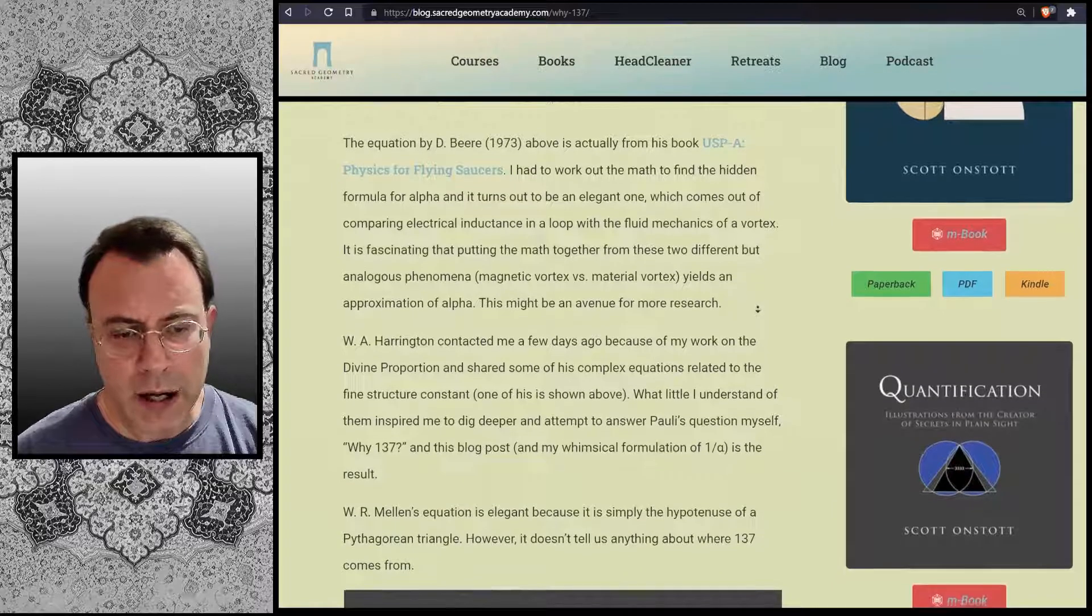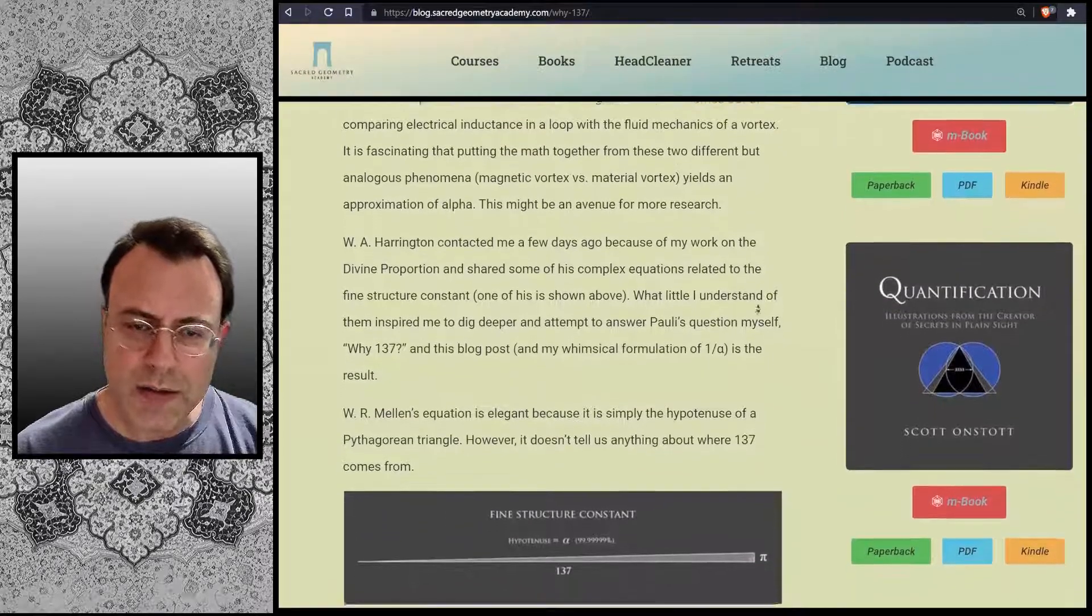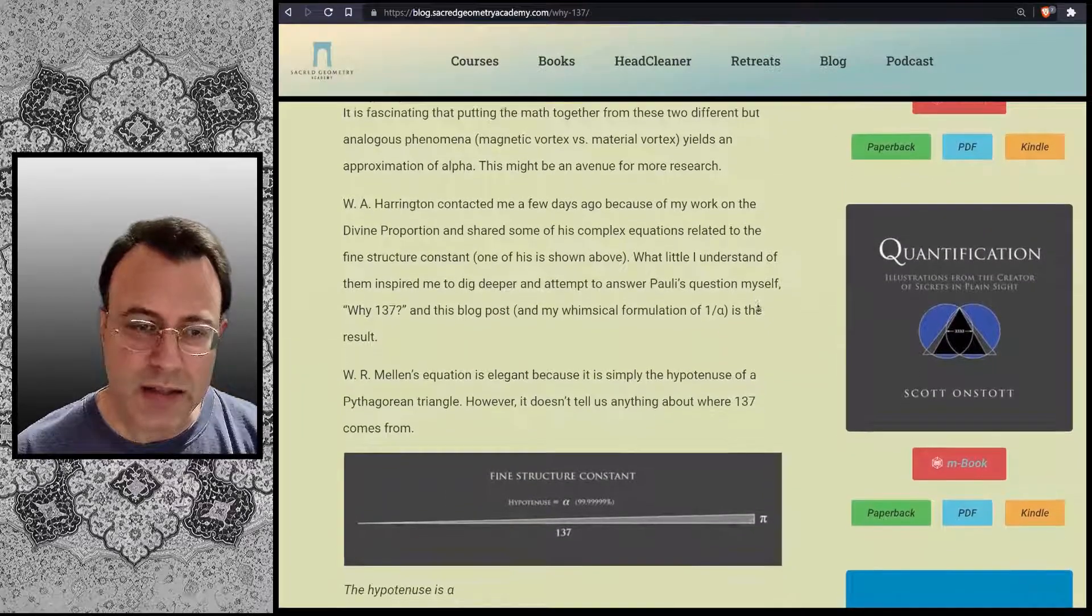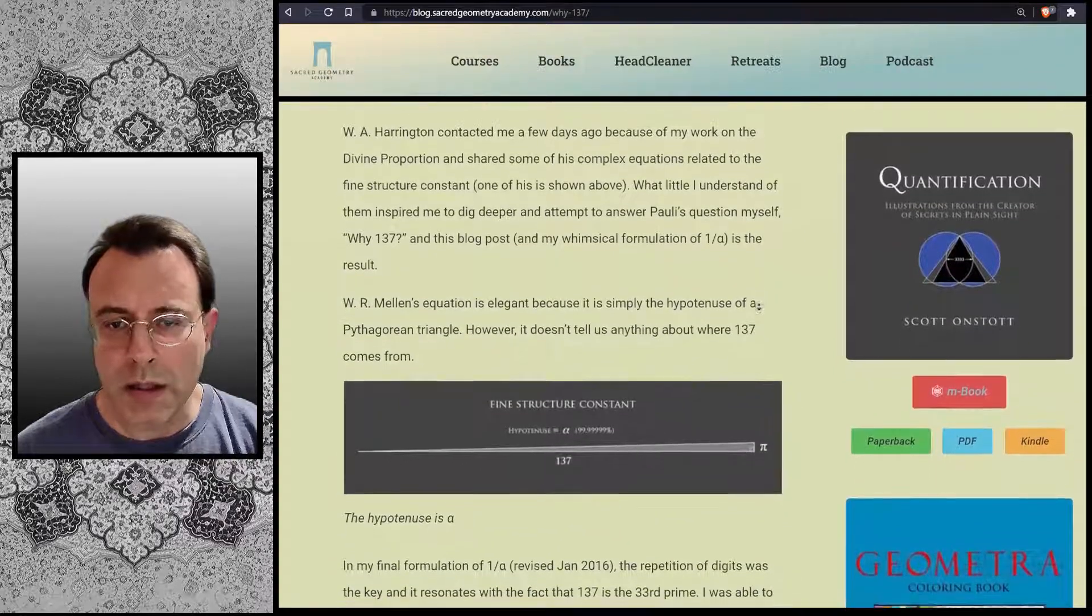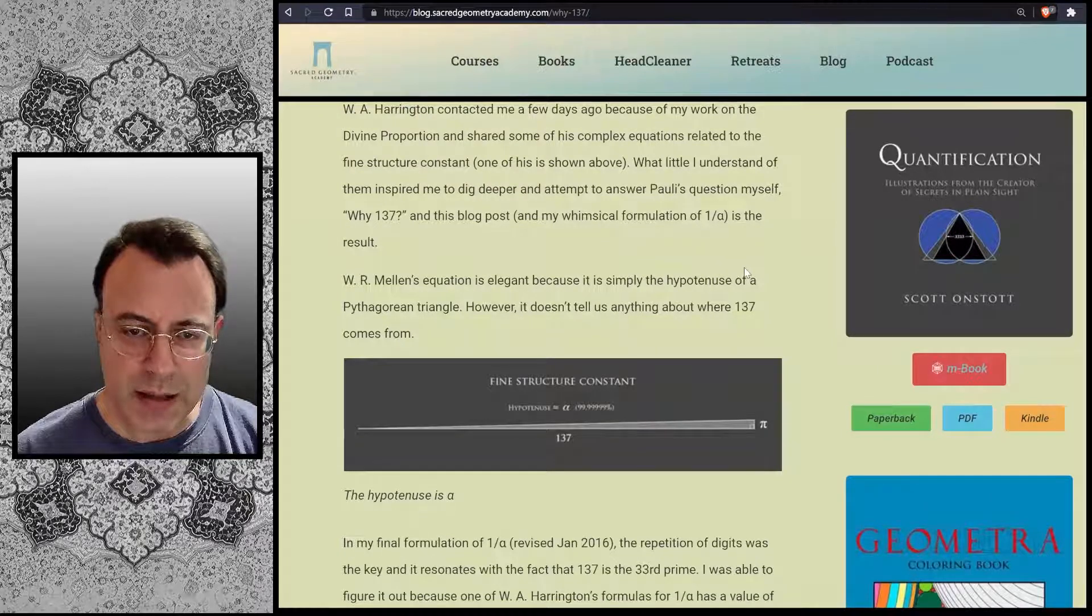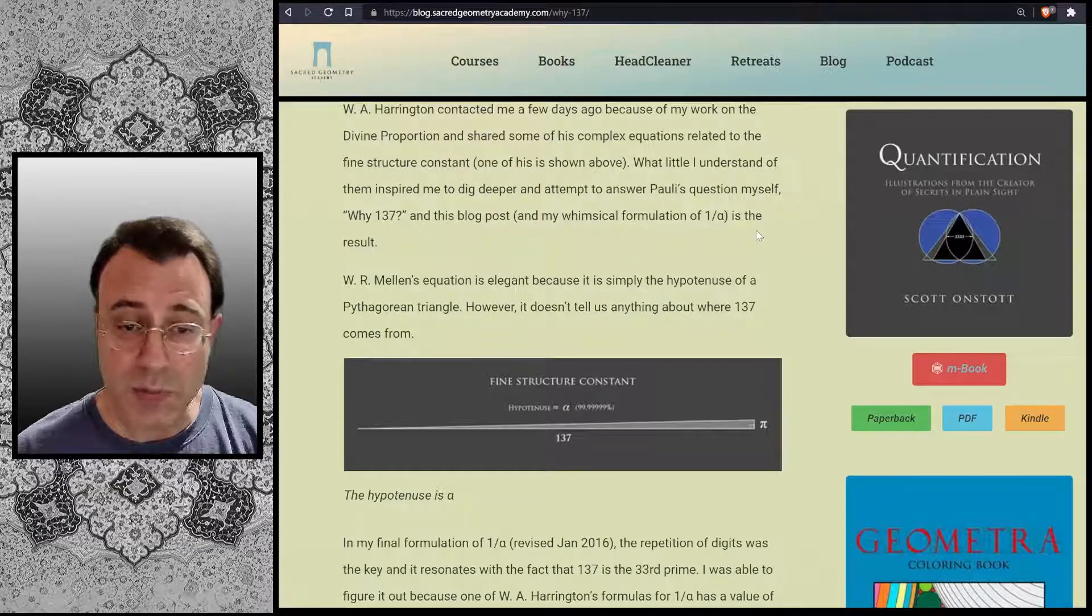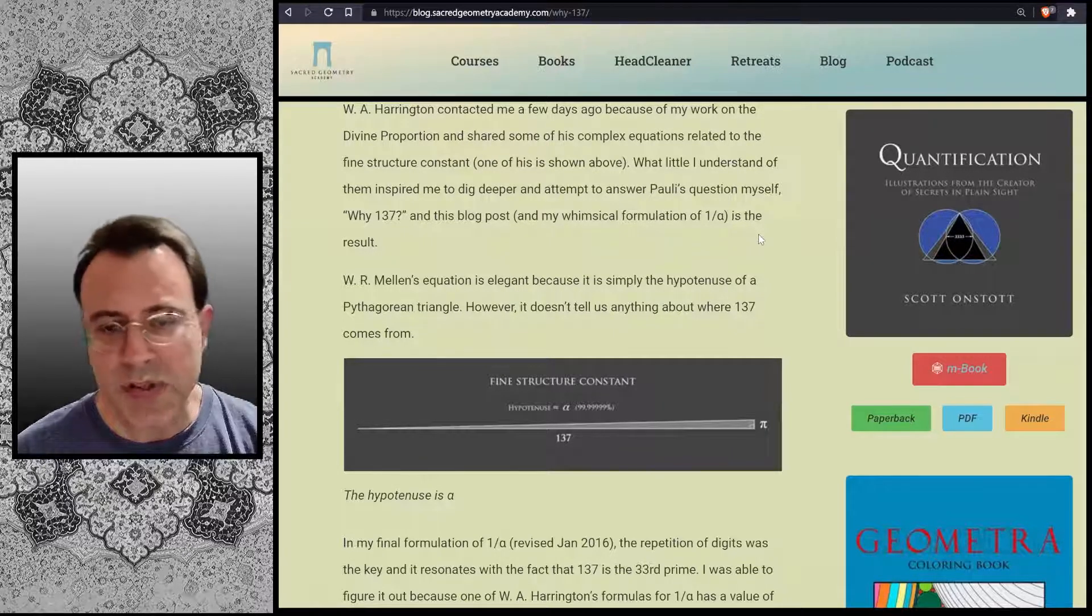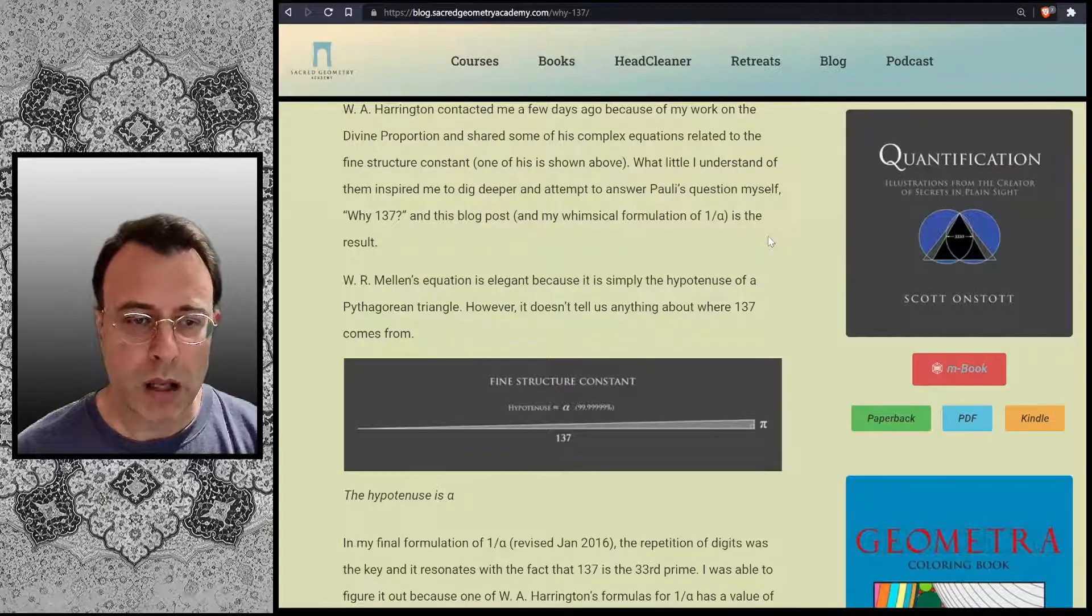W.A. Harrington contacted me a few days ago because of my work on The Divine Proportion, and shared some of his complex equations related to the fine structure constant, one of his is shown above. What little I understand of them inspired me to dig deeper and attempt to answer Pauli's question myself: Why 137? And this blog post, and my whimsical formulation of 1 over alpha, is the result.